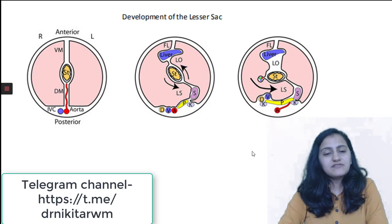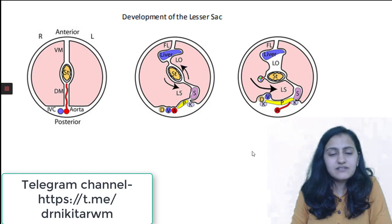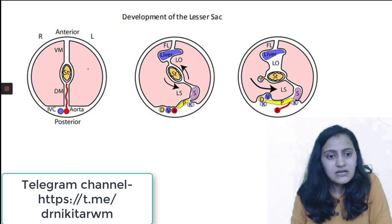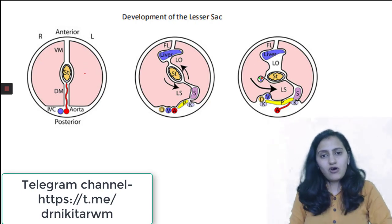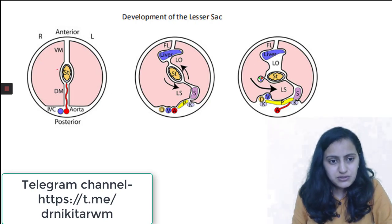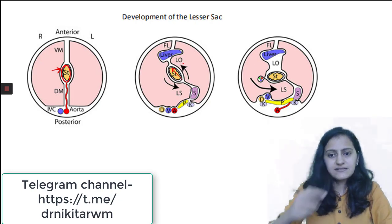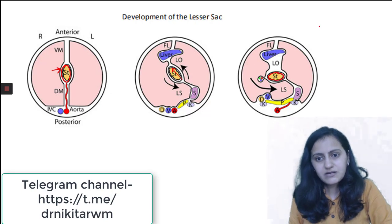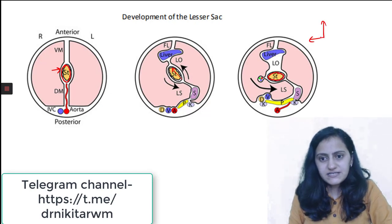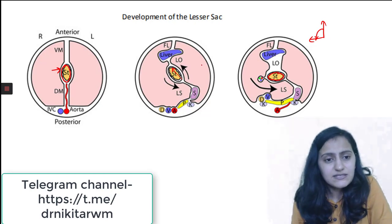Let us first see embryologically how the lesser sac is formed. Lesser sac is formed due to 90-degree rotation of the stomach. In this image, you can see the stomach is here, vertically oriented. The stomach rotates and becomes horizontal — that means it has undergone 90-degree rotation. And that is what leads to formation of the lesser sac.